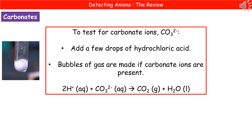The second anion we may want to test for is the carbonate ion, CO₃²⁻. We add a few drops of hydrochloric acid, and if carbonate ions are present, we get little bubbles of gas — because we're making carbon dioxide. The equation shows: 2H⁺ from the hydrochloric acid reacts with the carbonate ion CO₃²⁻ to produce carbon dioxide, CO₂, and water, H₂O.